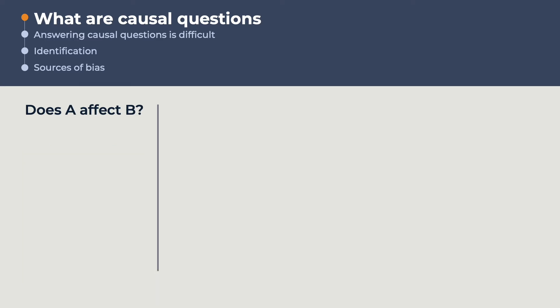When answering causal questions, the cause is normally a policy, an innovation, or some form of intervention. It is common practice to refer to the cause as a treatment. The object or characteristic that the policy, innovation, or intervention intends to affect is referred to as the outcome.